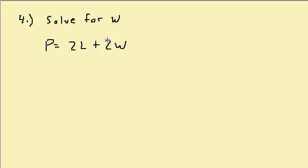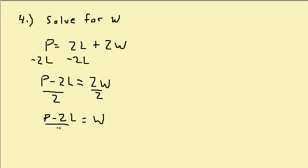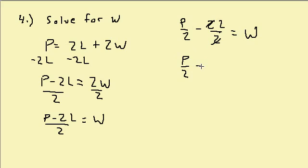Let's solve this one for W. I want to subtract 2L from both sides, so I get P minus 2L equals 2W. Then I divide both sides by 2 and get W equals P minus 2L over 2. We can split this up: P over 2 minus 2L over 2 equals W. The 2's cancel in the second term, so that simplifies to P over 2 minus L equals W.